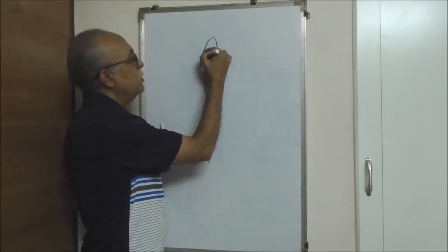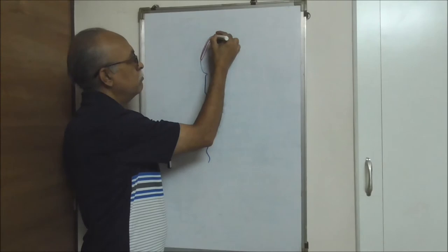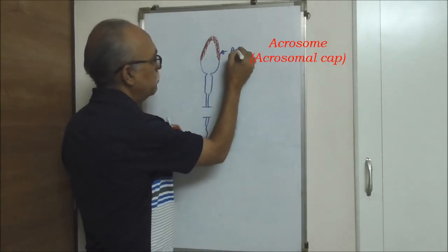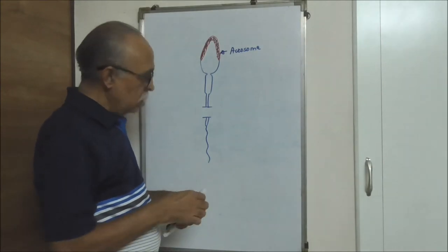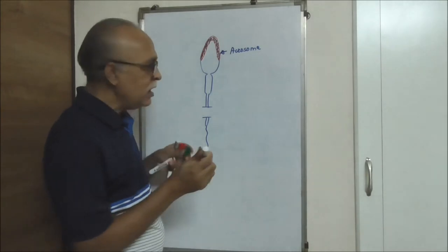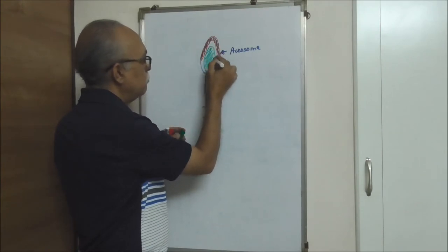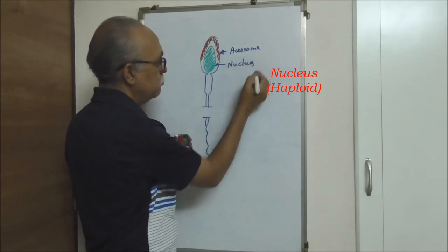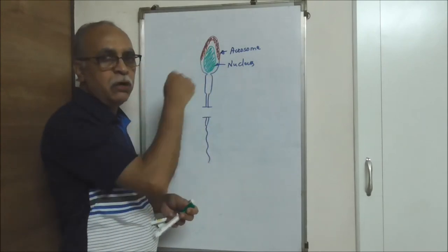At the tip of the head piece there is a structure called the acrosome, also identified as the acrosomal cap. Next to the acrosome, contained in the head piece, is a large haploid nucleus. The head piece is majorly occupied by the nucleus; cytoplasm is negligible and just contained around the nucleus.